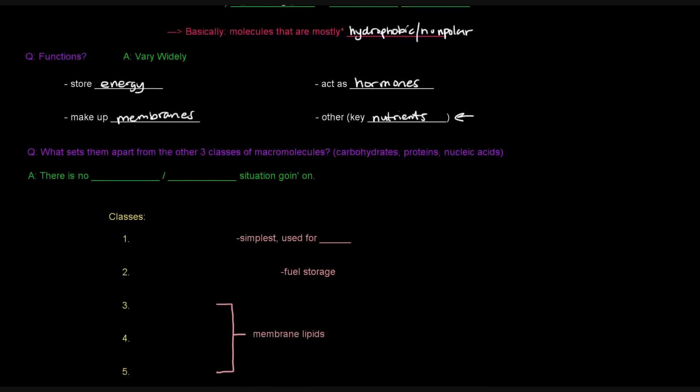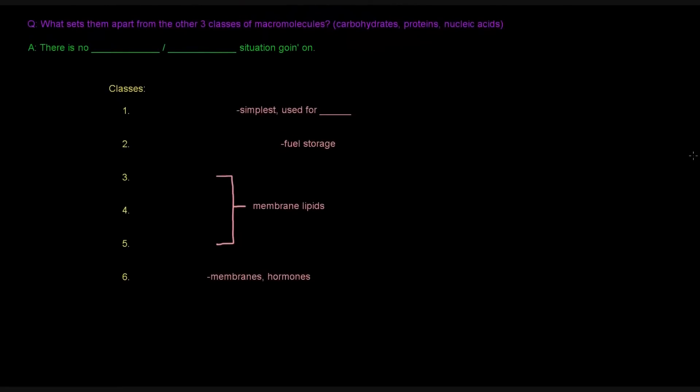And there is something key here. And that is that there's no monomer, polymer situation going on. If you recall, carbohydrates, right, the monomer units of carbohydrates are monosaccharides, and the polymers are polysaccharides.